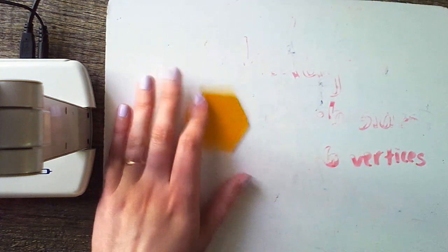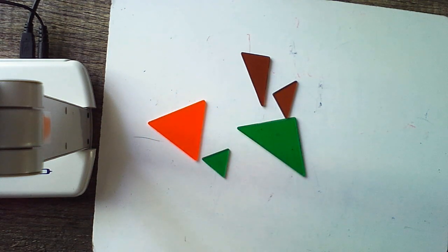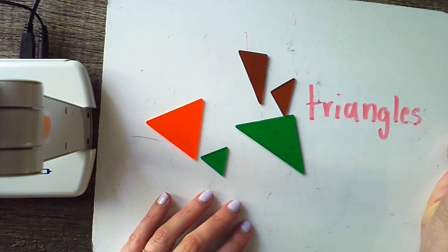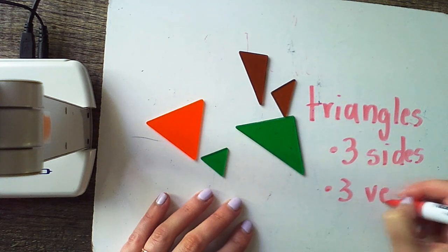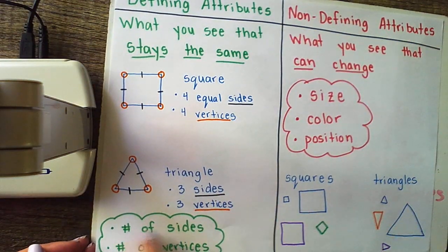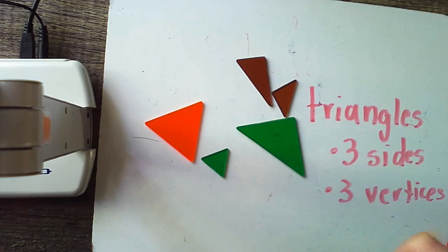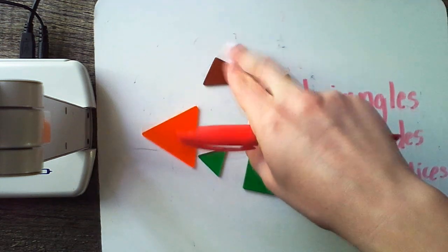One more group. What are these, friends? You're right — these are all triangles. Now, how do we know that these are triangles? What are some of their defining attributes? That's right — three sides and three vertices. Does it matter that some of them are big and some of them are small? Nope. Because remember, size is a non-defining attribute. We care about the number of sides and the number of vertices. Does it matter that some are orange, some are green, and some are brown? No, it does not. Does it matter that some are turned on their side? I can turn them however I want to — still a triangle, still a triangle, still a triangle.